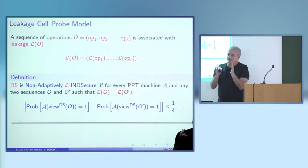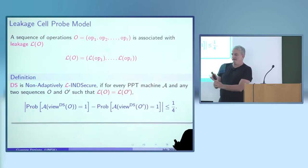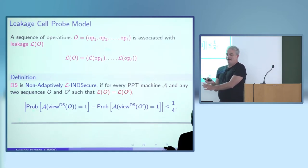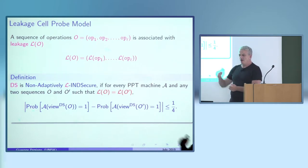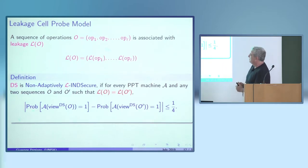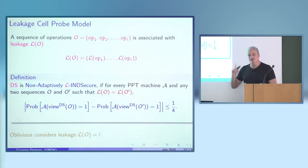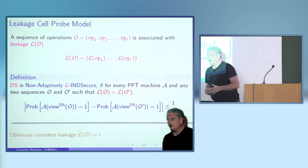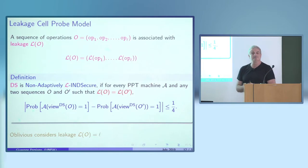The leakage per operation is something about the current operation and how it relates to previous operations. As a couple of examples: standard obliviousness is a special case of this model where the leakage only consists of the length of the sequence.